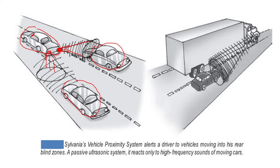This diagram shows your vehicle proximity system which alerts the driver to vehicles moving into his rear blind zones. It is a passive ultrasonic system — it reacts only to the high frequency sound of moving cars, not any other sound on the highway. It is an antenna which receives a directional signal. This vehicle can be seen by the driver in the mirror, but these vehicles in the blind zones cannot be seen.